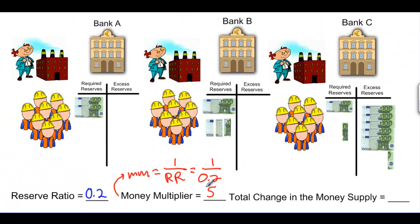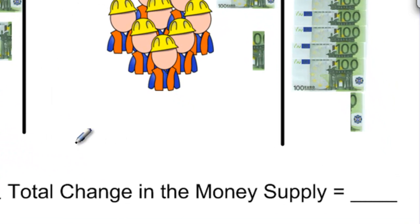This means that even though there is only 1,000 euros of hard currency in this economy, the total money supply can be a multiple of that 1,000 euros, due to the fact that commercial banks are only required to keep 20% of their total deposits on reserve at any given time. Money is being created through the lending and borrowing of banks' excess reserves and the new deposits created by any money that is lent and borrowed. The total change in the money supply following the 1,000 euro change in deposits will therefore be 1,000 euros times the money multiplier of 5, equaling 5,000 euros.